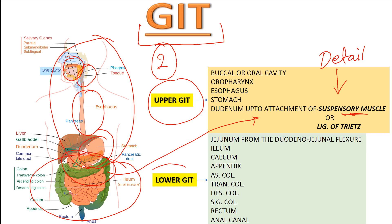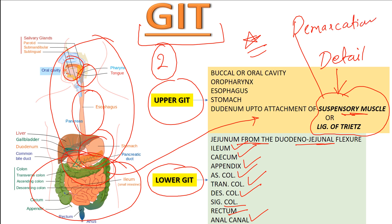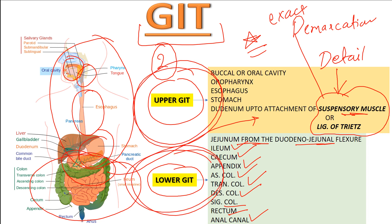The lower gastrointestinal tract includes the jejunum from the duodenum at the duodenojejunal flexure, the ileum, cecum, appendix, ascending colon, transverse colon, descending colon, sigmoid colon, rectum, and the anal canal. It is a very important point that the suspensory muscle of the duodenum — the ligament of Treitz — is the exact demarcation between the upper and lower gastrointestinal tract.